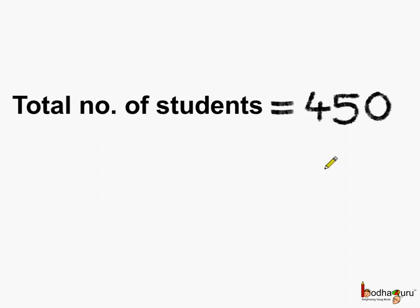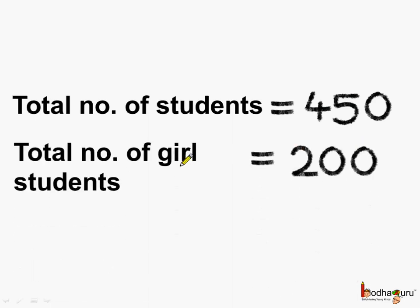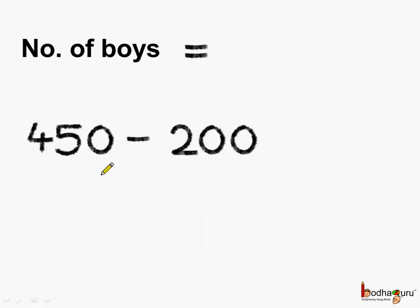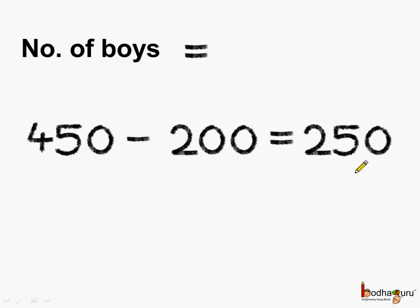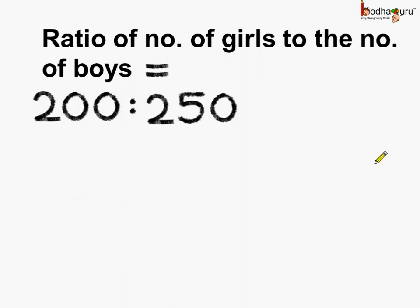For this, we know the total number of students is equal to 450, and the total number of girl students is equal to 200. So how many boys are there? Number of boys is equal to 450 minus 200, which is equal to 250. So there are 250 boys in the school. Now let us find the ratio of number of girls to the number of boys.